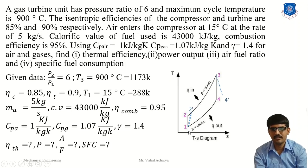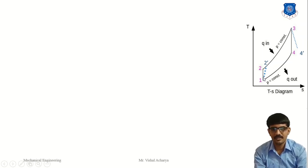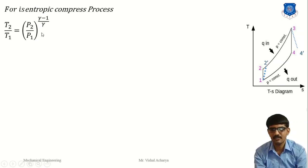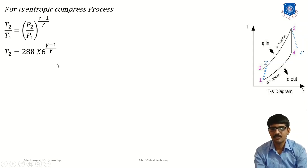In the T-s diagram, because turbine and compressor efficiencies are less than 100%, the actual states are shown as 2-dash and 4-dash. First, we find all temperatures. For the isentropic compression process: T2/T1 = (P2/P1)^((gamma-1)/gamma). The pressure ratio is 6 and the initial temperature T1 is 15°C = 288 K. Solving, we get T2 = 480.53 K.